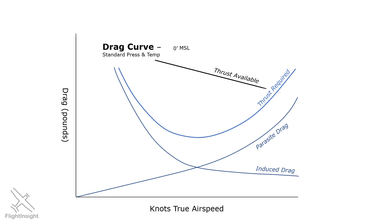Thrust is used to overcome drag, so the total drag curve can also be thought of as the thrust required curve. The amount of thrust available depends on how much air the propeller is pushing back, as represented by the thrust available curve. Thrust available reduces as we get faster because faster speeds see our aircraft flying at lower angles of attack, so the propeller doesn't take as big a bite of air. The speed at which we have the biggest gap between thrust available and required — the maximum excess thrust — is where we find VX. At this speed, we've got the most extra thrust to translate into our climb angle and clear those obstacles.